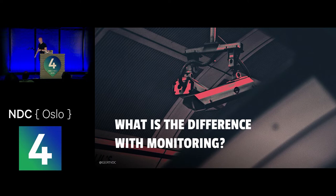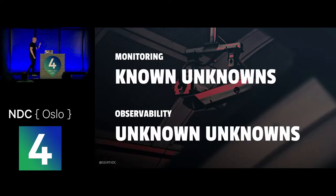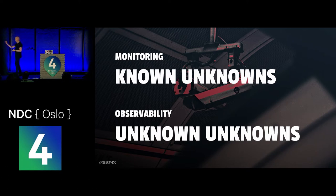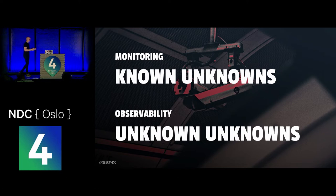When you say this to IT operations teams, they say: we already have monitoring — what's the difference? The basic thing is that monitoring focuses on known unknowns. You have a certain amount of things you know can go wrong. For example, when the disk is full, your application might crash — so you start monitoring disk usage. That's a known unknown: you know the disk might be full, you just don't know when. Observability is trying to create a system you can query when you don't know what will go wrong or when, but when stuff does go wrong, you want to be able to query what's actually happening.